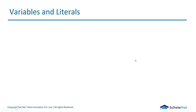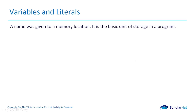We're going to learn about variables and literals in C language. A variable is a name given to a memory location - it can store values, just like in mathematics. Literals are the values given to variables; those are called literals.